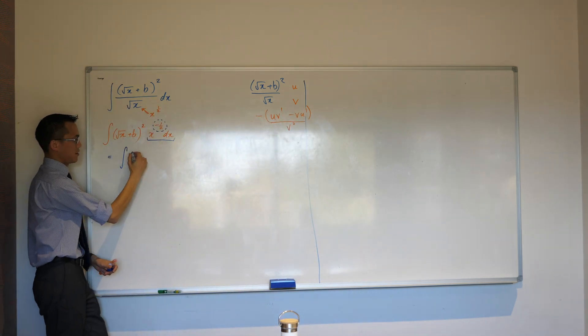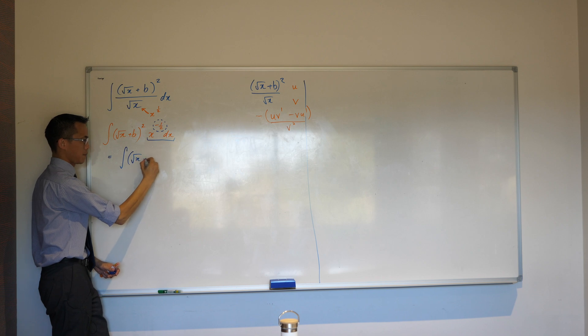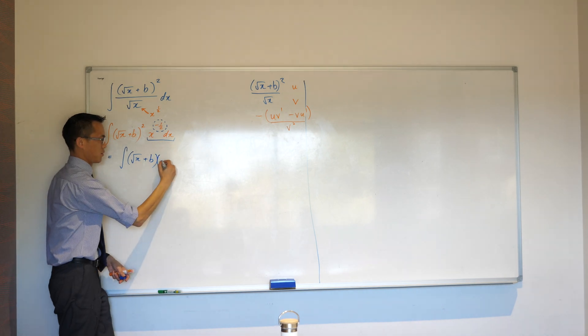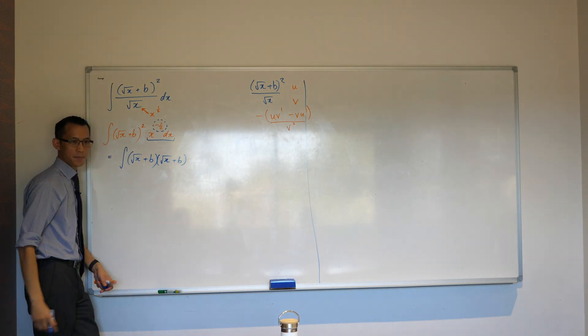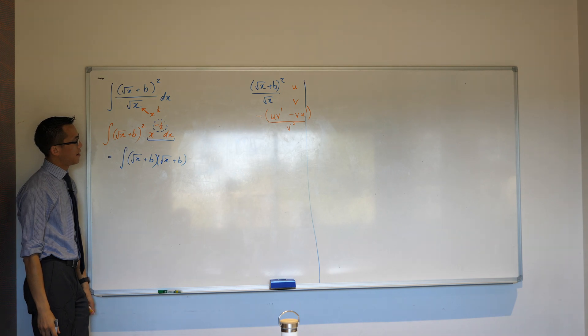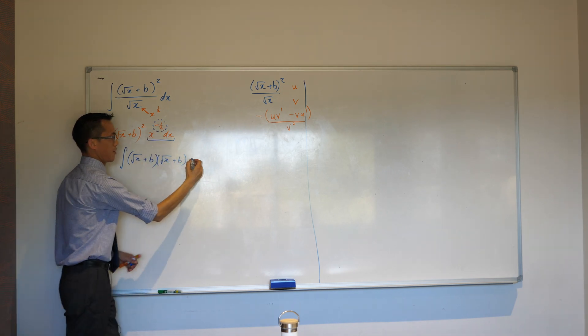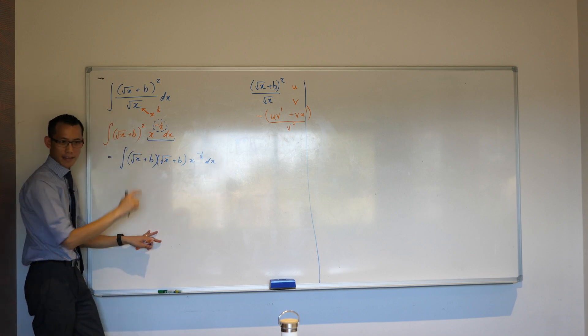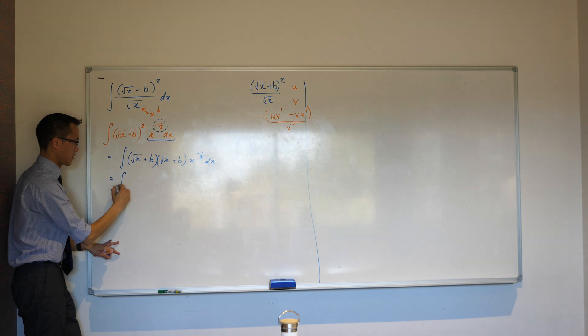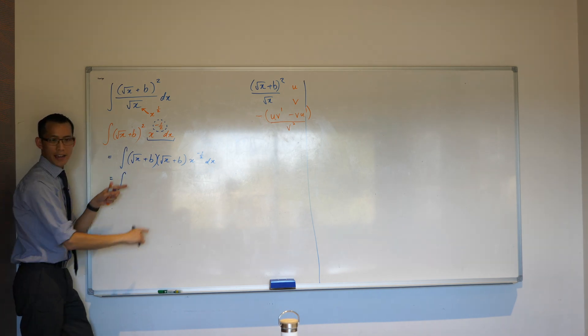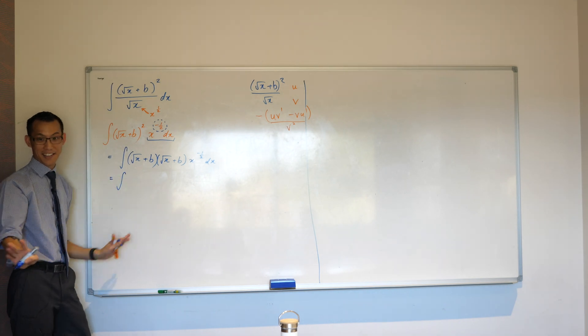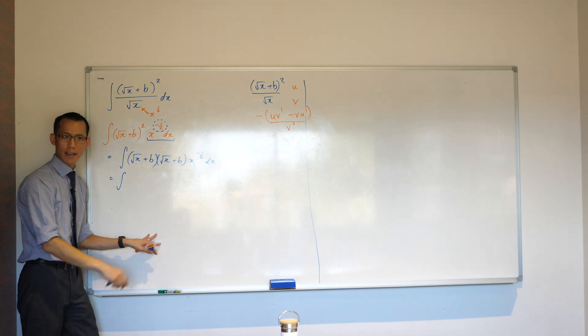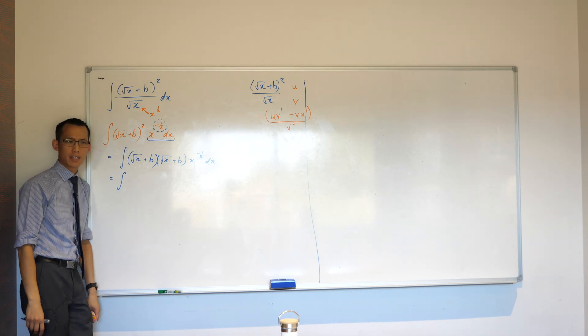So, integrate, what I've got here is the square root of x plus b, and squaring just means do it again. Square root of x plus b, okay? Now, you wrote this x to the power of negative half over here. I'll just leave him hanging out there. We'll come back to him later on.